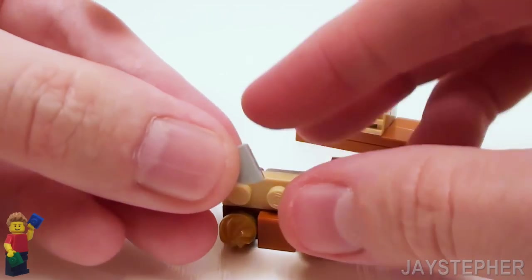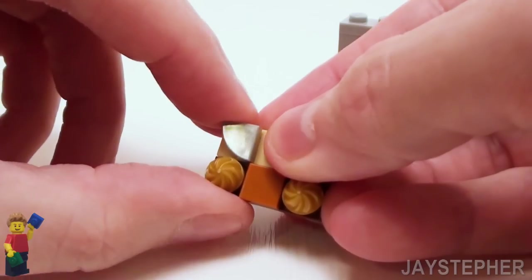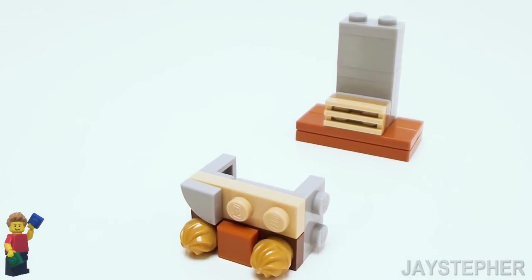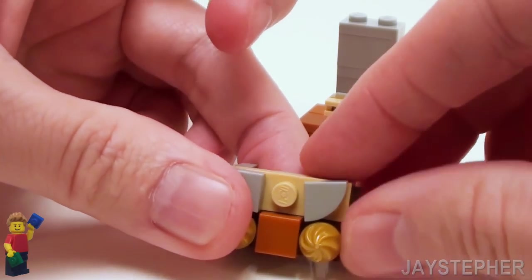On the left-hand side, let's place a 1 by 1 quarter round flat tile. Let's put another 1 by 1 quarter round tile on the right-hand side.